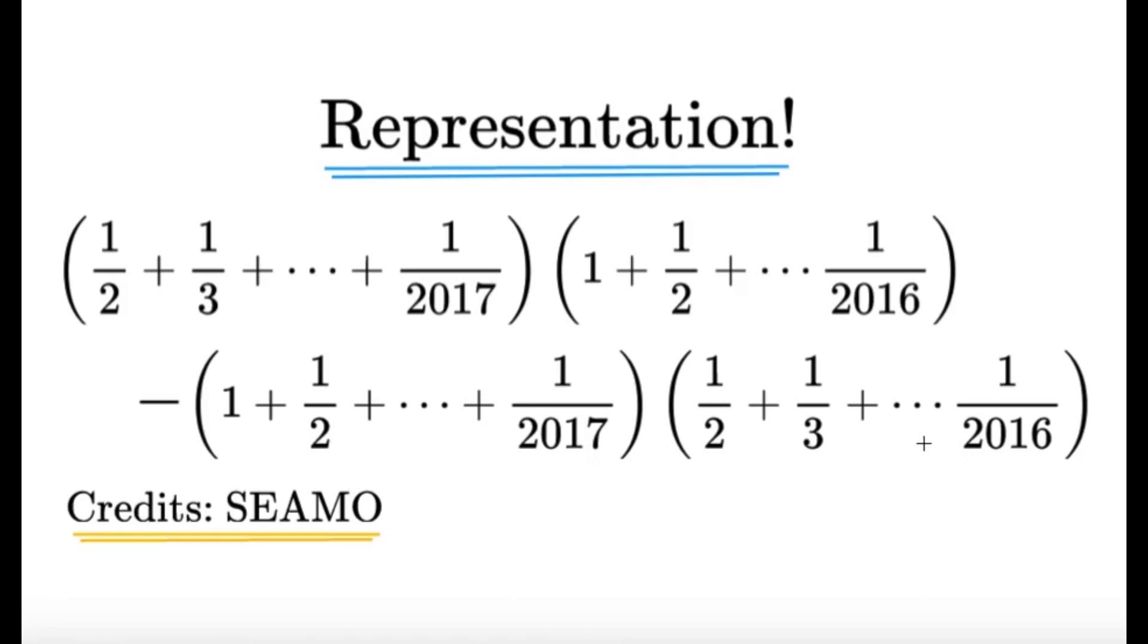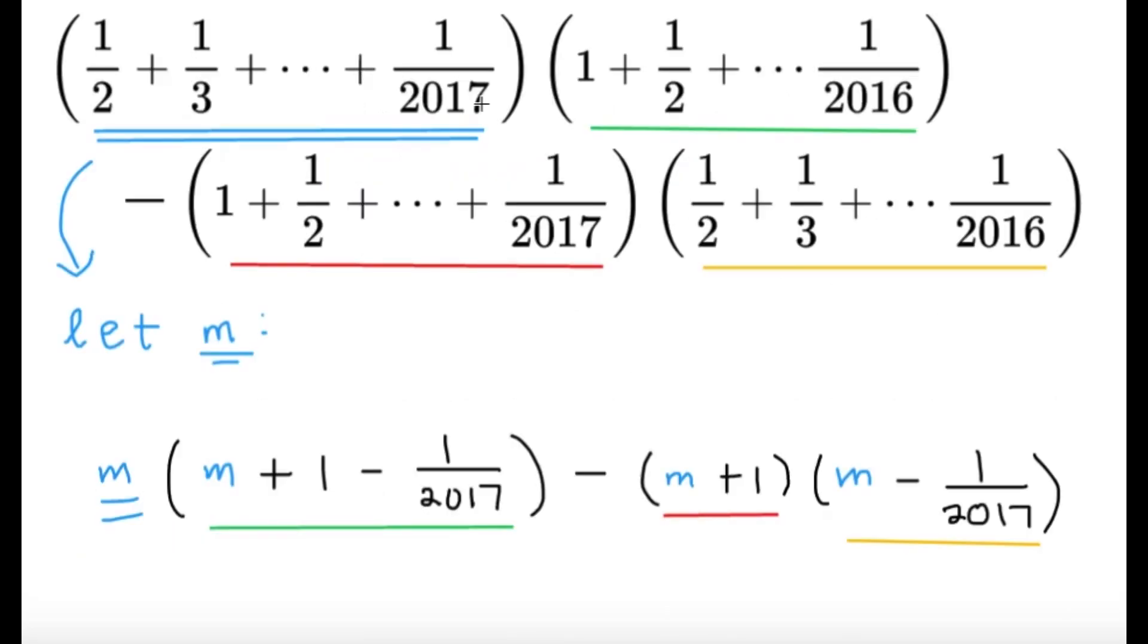So what we would do here is a representation. It's a very neat trick because it helps you simplify stuff, as you will see in the solution. So for example, let's just take the first term over here. Let's just call it m. I don't know what m is, but surely it's going to help us out here.